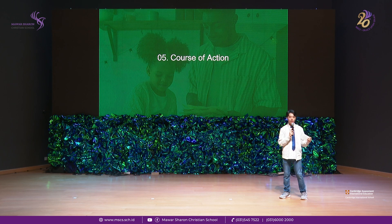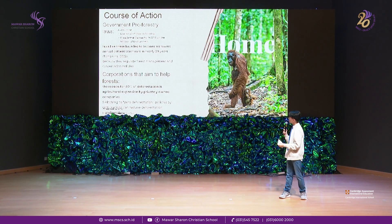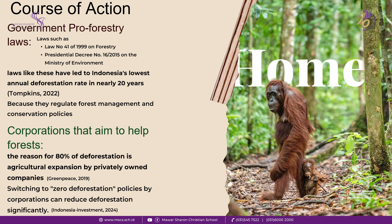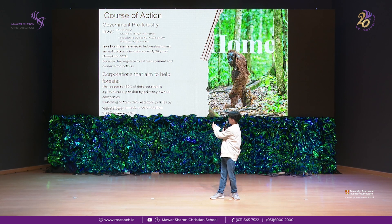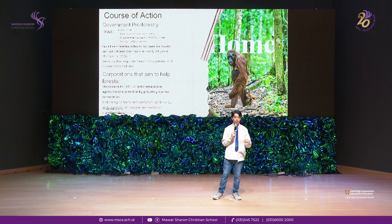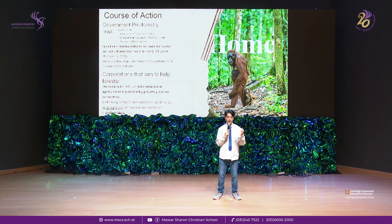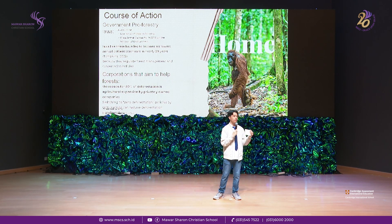Now, what can we do to help our fellow Indonesians in Riau? From my research, the two most effective ways are: first, government pro-forestry laws such as Law Number 41 of 1999 and the presidential decree of the Ministry of Environment. Laws like these have helped Indonesia achieve one of its lowest annual deforestation rates in over 20 years. Second, corporate cooperation — since around 80% of deforestation is driven by agricultural expansion owned by private companies, if those companies adopt more forest-friendly policies, it will significantly help reduce deforestation in Riau.